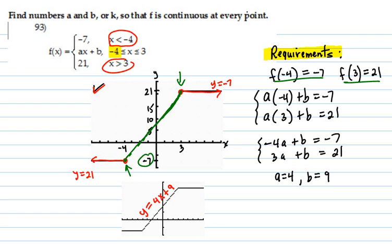So that means that you have a times negative 4 plus b has to equal negative 7. And a times 3 plus b has to equal 21. It's a system of two equations, two variables. You clean it up a little bit. You solve it using your algebra 1. And you come up with a equals 4 and b equals 9.